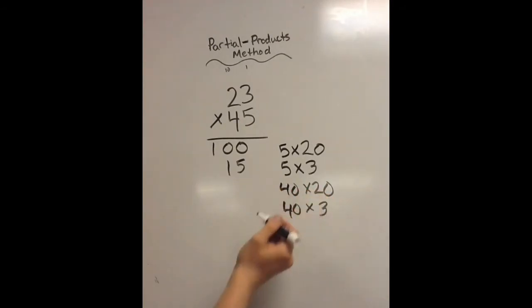Here, I know that 4 times 2 is 8. So, 4 times 20 must be 80. 40 times 20 would be 800. And then lastly, 40 times 3. Well, 4 times 3 is 12, so 40 times 3 is 120.